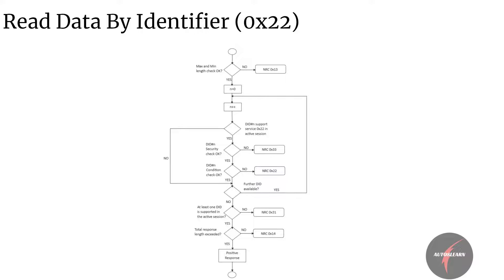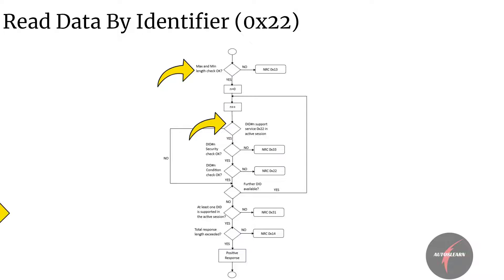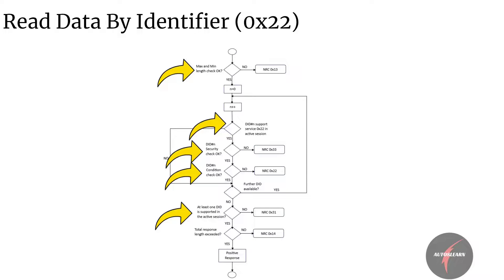The diagram shows the order of evaluation of different NRCs. Firstly, NRC 0x13 is checked for minimum and maximum length of the request, followed by a check on support of the service in the current active session — failure leads to NRC 0x31. Next, a security check confirms if secure access is required; if the ECU does not have the right access, it fails with NRC 0x33. Then a precondition check must be fulfilled before executing the service — failure leads to NRC 0x22. If the total response length exceeds the expected length, this leads to NRC 0x14. If all checks pass, a positive response is provided.